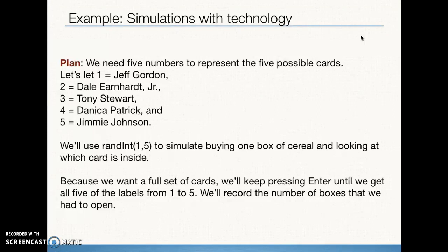That's going to represent buying one box of cereal and then figuring out which card is inside. We've assigned one to Jeff Gordon, two to Dale Earnhardt Jr., three to Tony Stewart, four to Danica Patrick, and five to Jimmy Johnson. So depending on what random integer we get, that represents which card we got. We want a full set of cards, so we're going to keep on using our random integer generator until we get one of each, and then we're going to record how many boxes we actually had to buy.